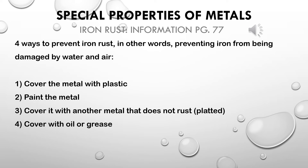Grease is a little thicker in texture than oil but does the same thing. On the same page, figures show examples: wire hangers coated with plastic, a metal fence that has been painted, and a watering can coated with zinc to prevent rusting — because a watering can holds water and we know iron rusts when in contact with water or air. Figure 6 shows a rusty bike chain that needs grease or oil.